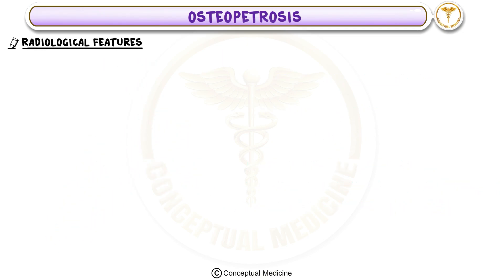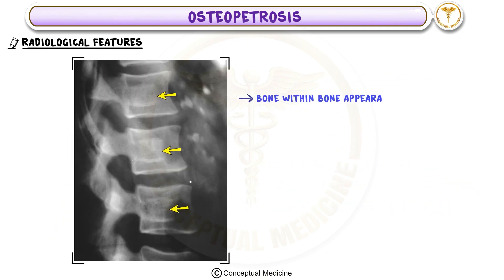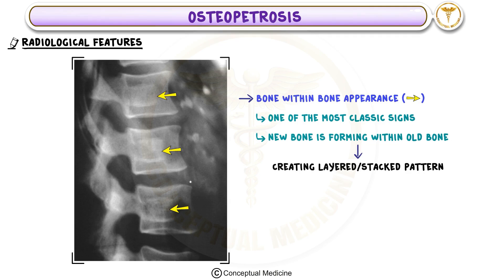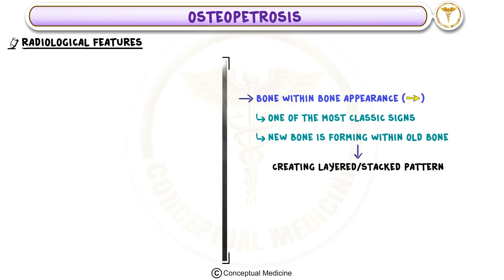Radiological Feature 1: Bone-within-Bone Appearance. One of the most classic radiological signs is the bone-within-bone appearance. This occurs because new bone is forming within old bone, creating a layered or stacked pattern.